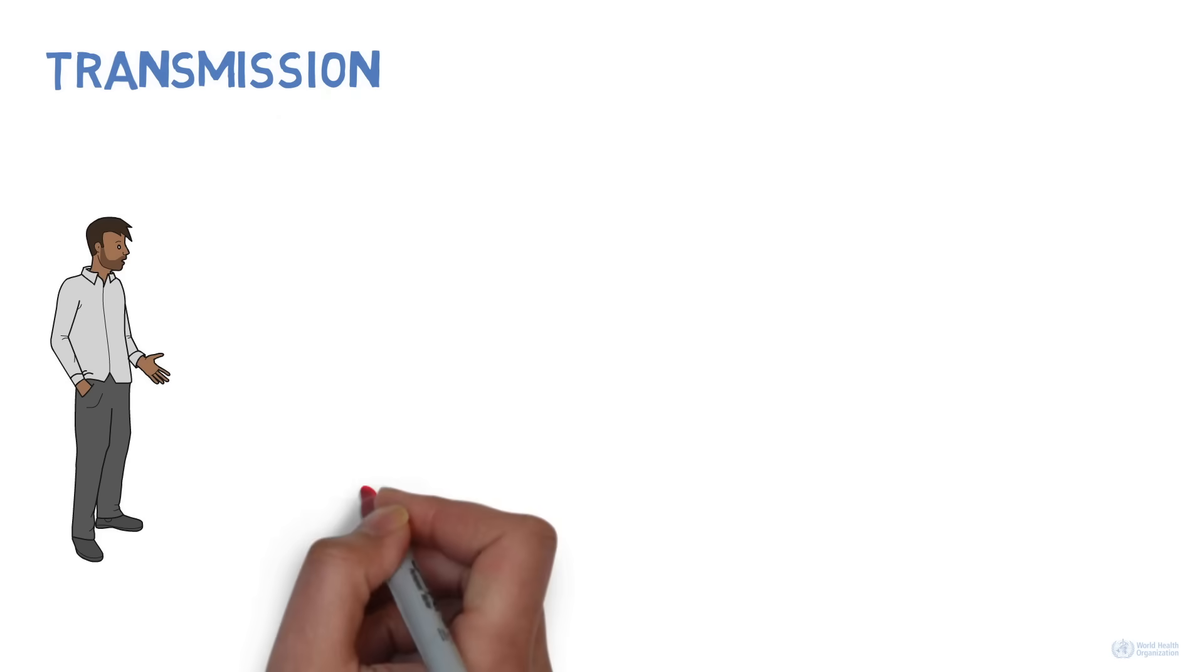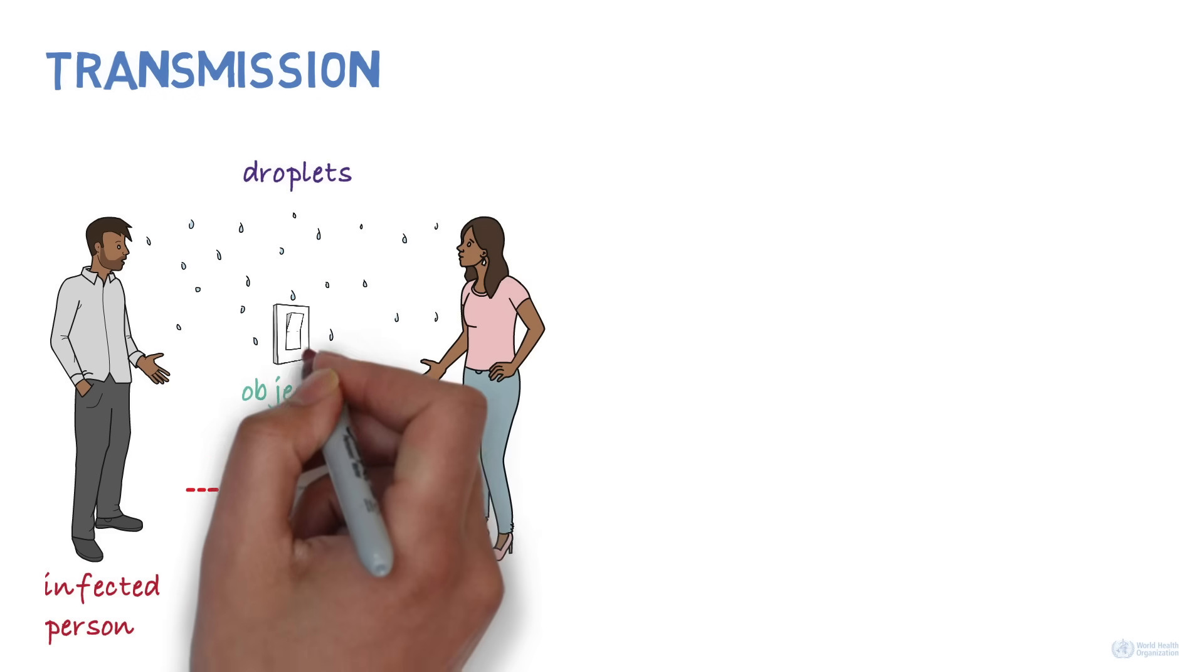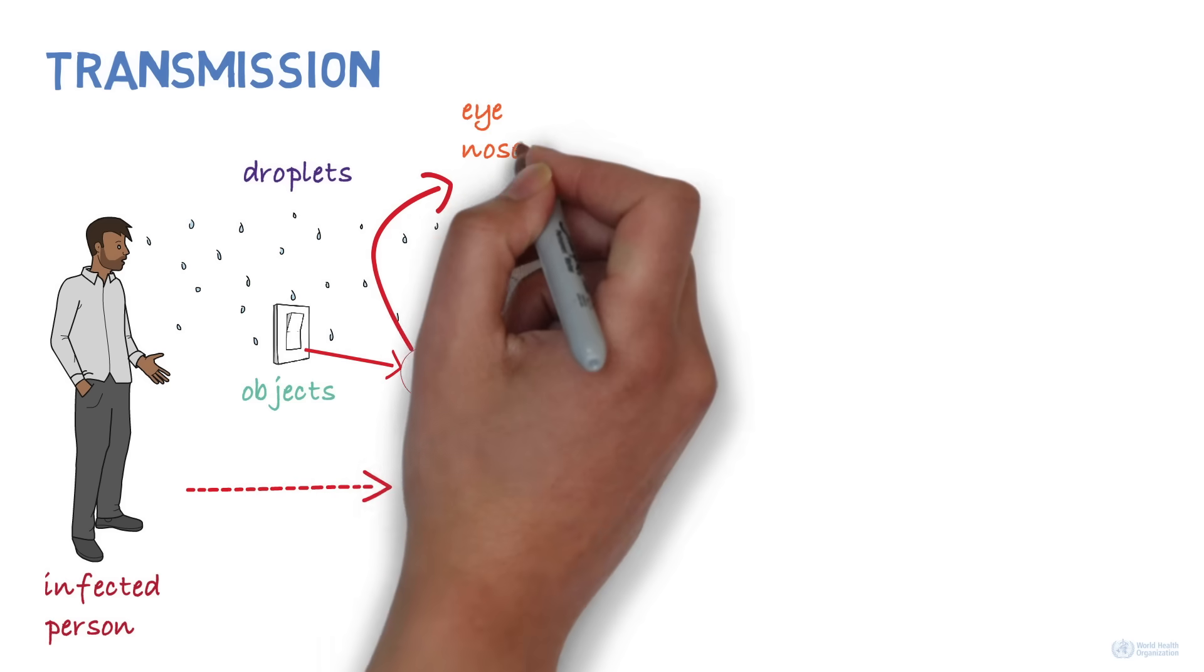How does the disease spread? The disease can spread from person to person through droplets, when an infected person releases those droplets through coughing, talking, or sneezing, for example, when close to another person. It can also spread when infected droplets land on objects, and when another person touches them and then touches their eyes, nose, or mouth.